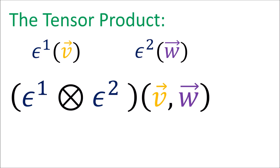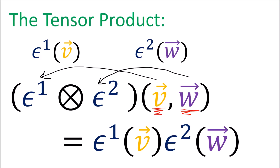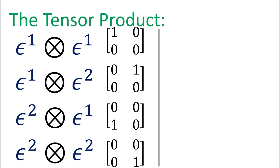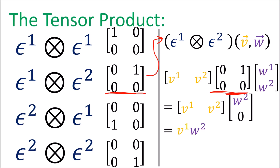The tensor product of two covectors creates a sort of double covector — a function that takes two vector inputs. To compute the output we pass the vectors to the covectors and multiply the outputs of each. Speaking informally, these four tensor products of the epsilon basis covectors are sort of like these four matrices. Written in array notation using the matrix for epsilon 1 tensored with epsilon 2, and churning through the array multiplications, we get the first component of v multiplied by the second component of w — exactly the output of epsilon 1 acting on v multiplied by epsilon 2 acting on w.